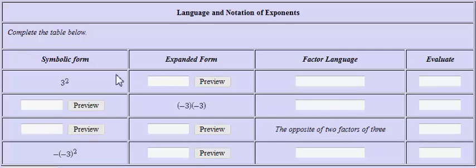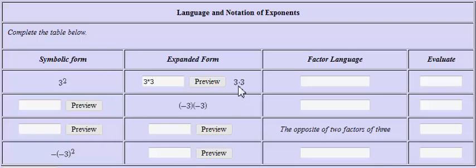Three squared is the symbolic form that really means you have two factors of three, so this really means three times three. I will type three, then use an asterisk — which is shift+8 to get a multiplication symbol — and then another three. If you want to preview your answer to see how the computer reads it, notice it uses a dot, the pretty print version of an asterisk.